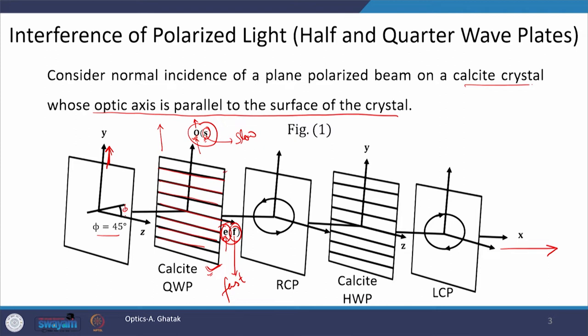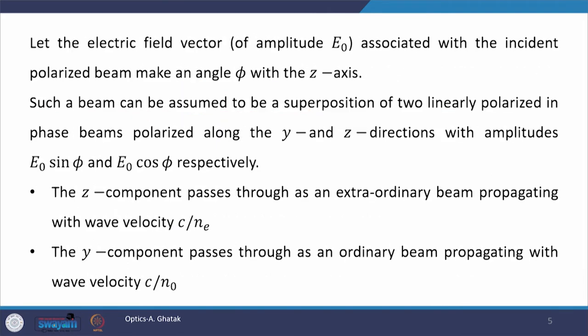The angle φ is made with respect to the z-axis, and the amplitude of the incident wave is E₀. Since this linearly polarized incident wave is polarized at angle φ with respect to the z-axis, it can be assumed to be a superposition of two linearly polarized, in-phase beams polarized along y and z directions. We can always split this linearly polarized beam into its z and y components.